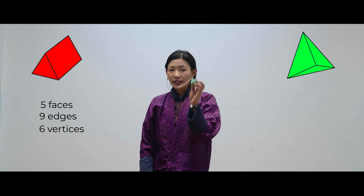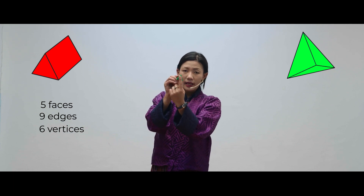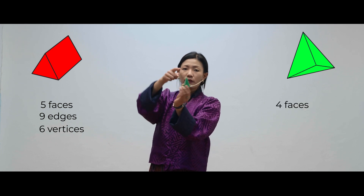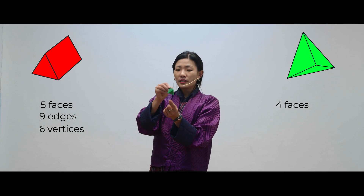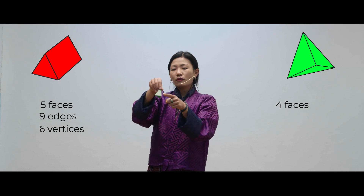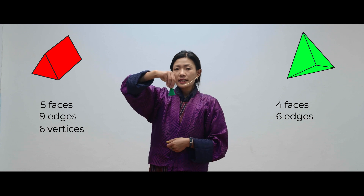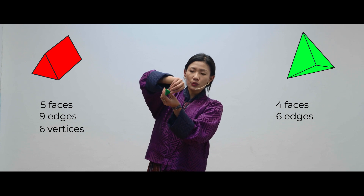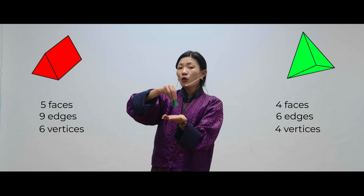Let's take a look at the pyramid now. How many faces does it have? One at the base, then one, two, three, four faces. How many edges does this shape have? One, two, three, four, five, and six — six edges. Now the vertices: one, two, three, and four. It has four vertices.